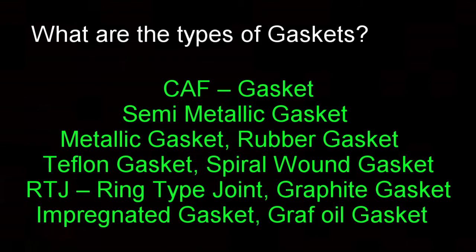What is a gasket? It is a sealing member between two flanges. Types of gaskets: calf gasket, semi-metallic gasket, metallic gasket, rubber gasket, Teflon gasket, spiral wound gasket, RTJ gasket, graphite gasket, impregnated gasket, and graphoiled gasket.